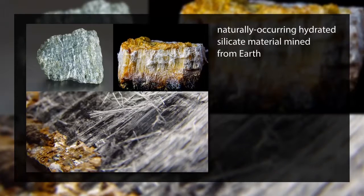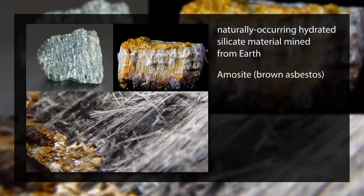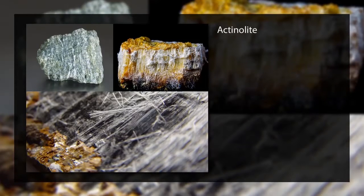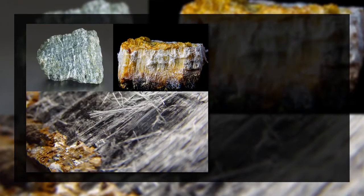Some of the types of asbestos include Amosite (brown asbestos), Chrysotile (white asbestos), Crocidolite (blue asbestos), Actinolite, Anthophyllite, and Tremolite. The most common are Amosite, Chrysotile, and Crocidolite.